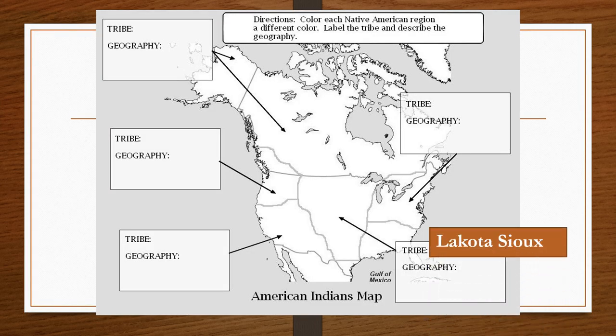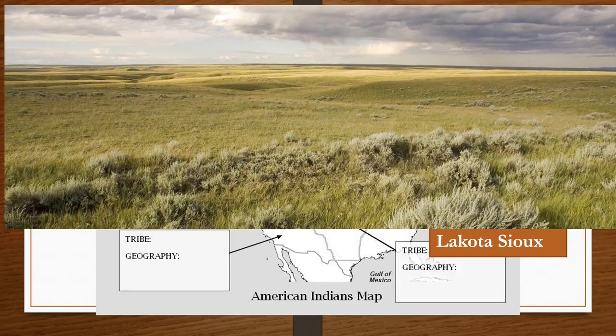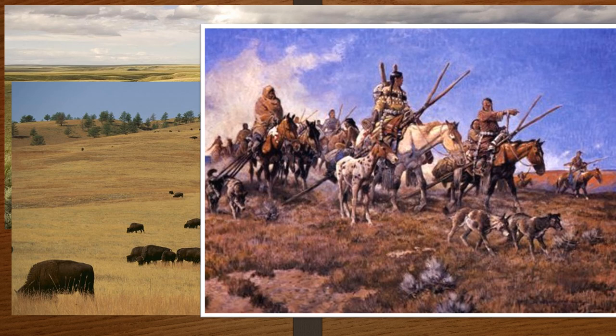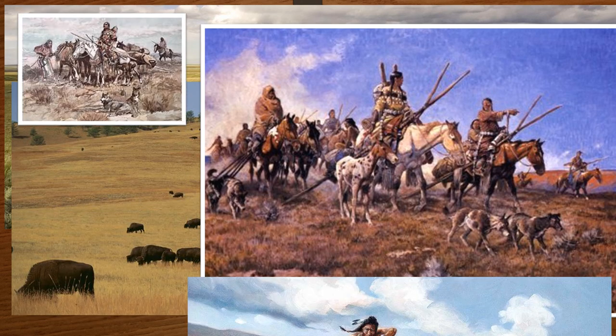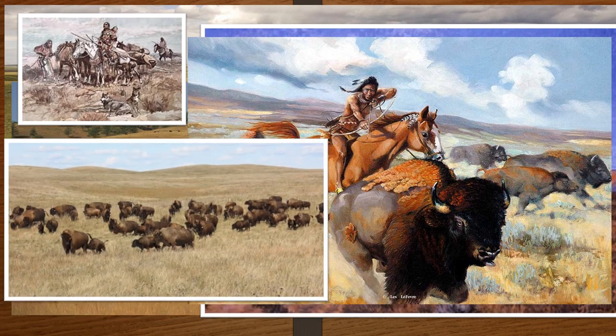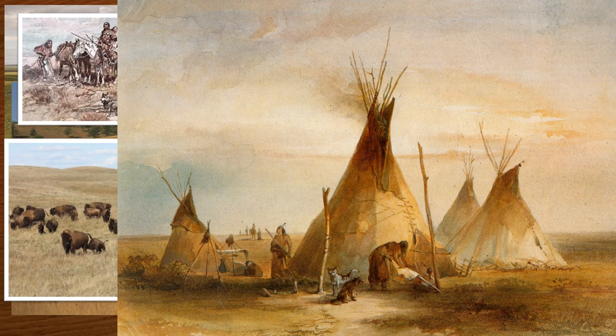The Lakota Sioux tribe inhabited the Great Plains, flatlands in the Midwestern region of North America. You can color this region yellow. The geography was quite different from the forests of the Iroquois, so the Lakota Sioux had a different lifestyle. Draw or write about the flatlands that you see here in these pictures. Very few trees existed for building houses, and houses could not be permanent. The Lakota Sioux tribe moved a lot, following the herds of buffalo that migrated to different areas on the prairie depending on the seasons, so they lived in collapsible teepees that folded up when they had to move.